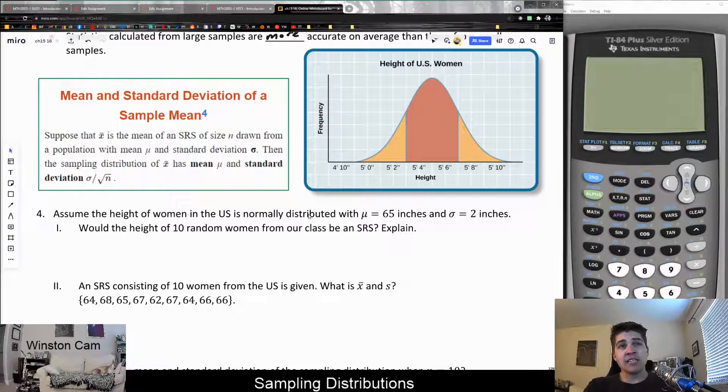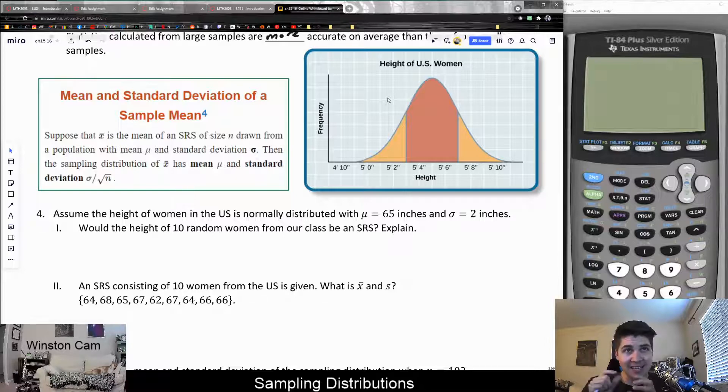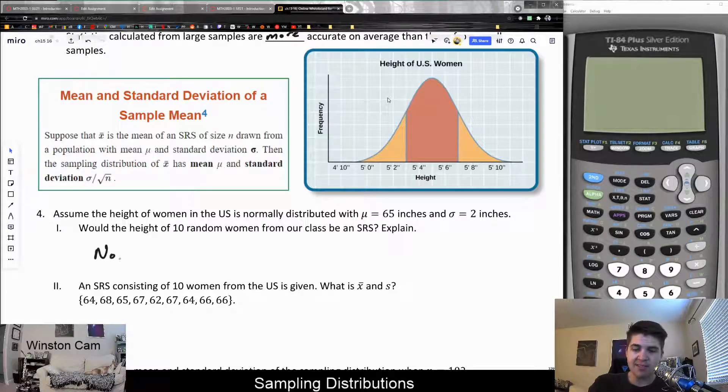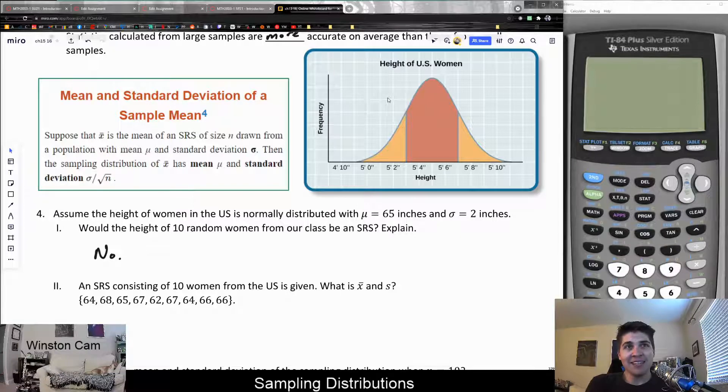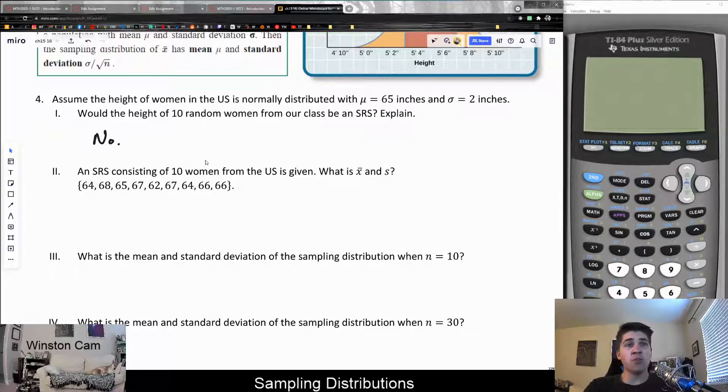But would it be an SRS? You can go ahead and think about this, pause and think for yourself. The answer is no, because our class is not a random sample of U.S. women. The population being described here is women in the United States. However, college students, there's some bias there. College students might be taller than your average U.S. women. And it could also be because of their age. As women get older, they get shorter. The fact that we're taking specific college students from a particular class is not a simple random sample. So if we're trying to do these sorts of statistics, we can't use data from our class. We would need random women from the United States.